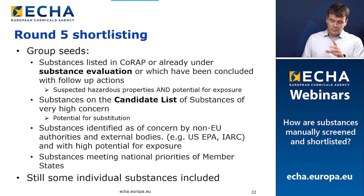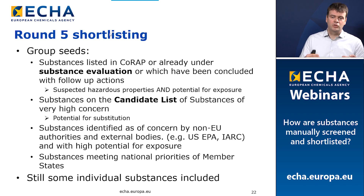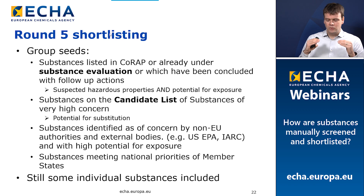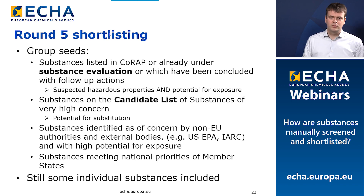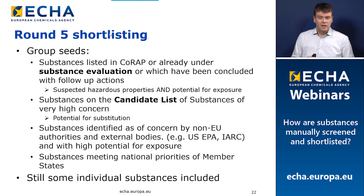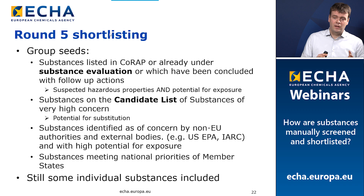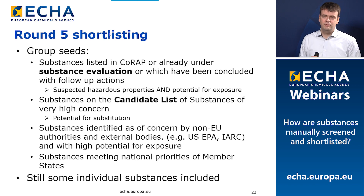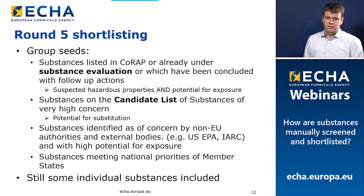In round five we are also looking at substances identified as of concern by non-EU authorities or external bodies that have a high potential for exposure according to our data. As always in each round, we have substances that meet national priorities — member states bring their own candidates, not necessarily pinpointed by IT algorithms. We still have some individual substances on the shortlist, not everything is in groups. Usually this means we haven't been able to identify group members for those individual substances in this particular exercise.